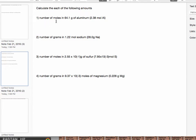We're going to start here with the number of moles in 64.1 grams of aluminum. So our plan of attack is we always start off by writing down what we know first. So we're going to write down that we have 64.1 grams of aluminum, and we need to convert that to moles.